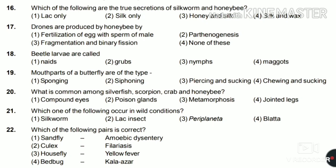Eighteenth: beetle larvae are called naiads, grubs, nymphs, or maggots? The answer is grubs. Nineteenth: mouth parts of the butterfly are of type sponging, siphoning, piercing and sucking, or chewing and sucking? The answer is siphoning. The butterfly has a siphon which it can roll up, and when it needs to suck flower nectar it straightens it out. So the answer is siphoning type of mouth part.